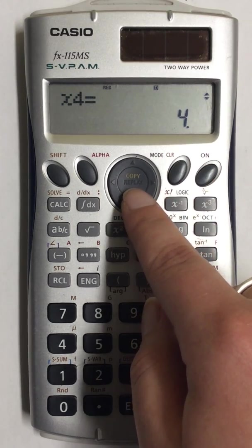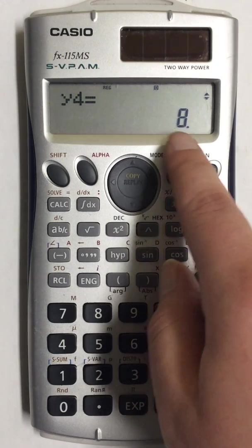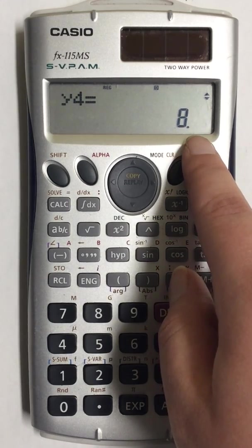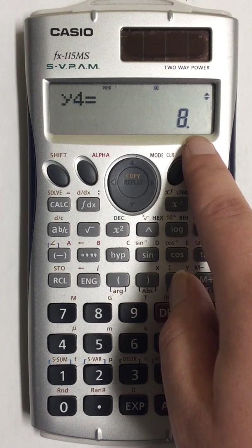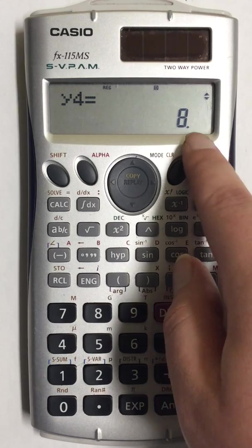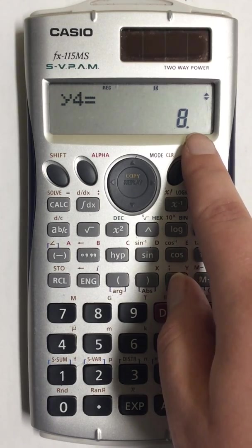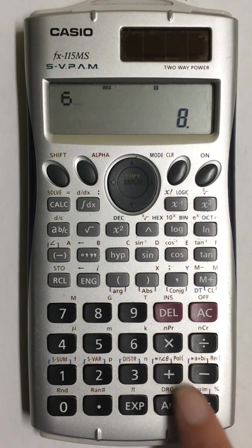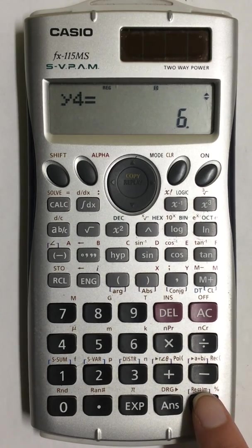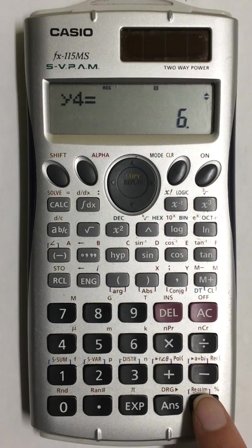If you need to change a number, say this one was 6 instead of 8, as long as the number is on the screen, just enter in the correct number and press enter, and it will overwrite the number in that spot.